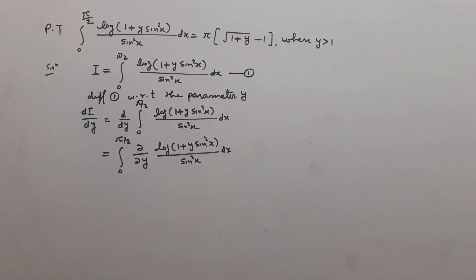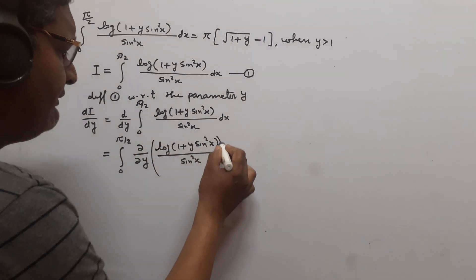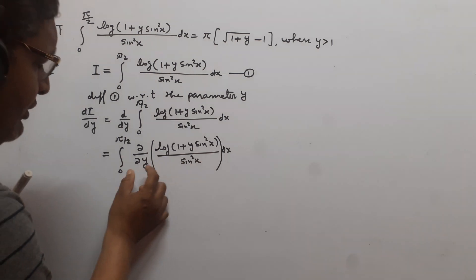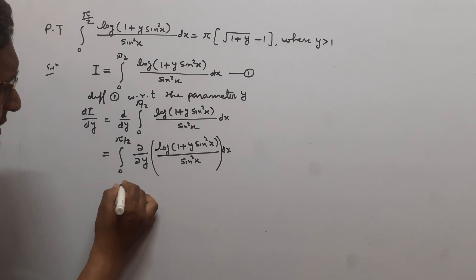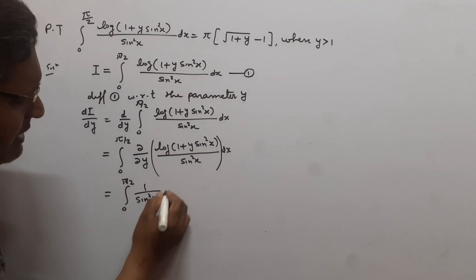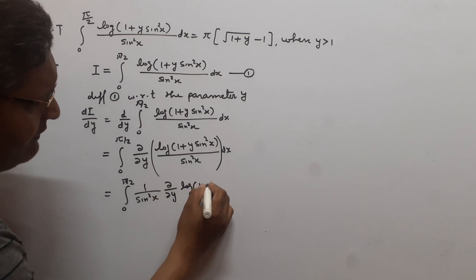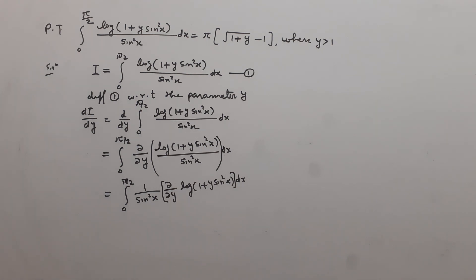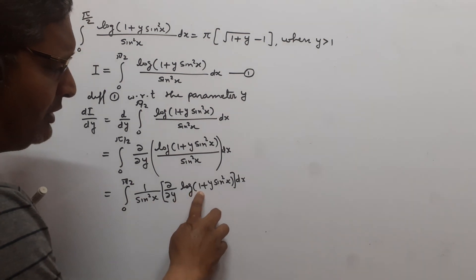Now we differentiate log(1 + y·sin²x) / sin²x partially with respect to y. Since sin²x is constant with respect to y, it goes outside the differential operator. So this can be written as ∫₀^(π/2) (1/sin²x) · (∂/∂y) of log(1 + y·sin²x) dx.